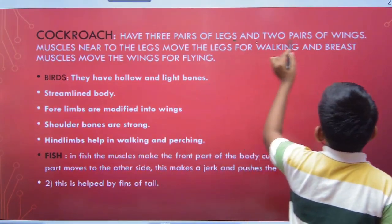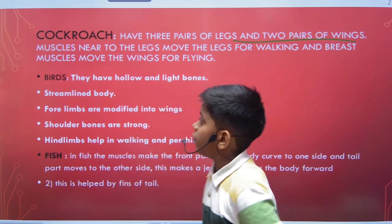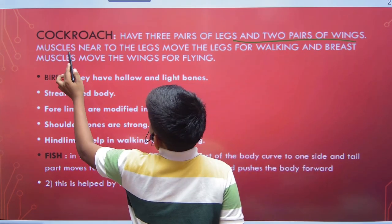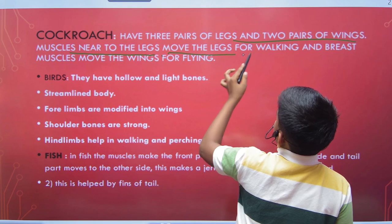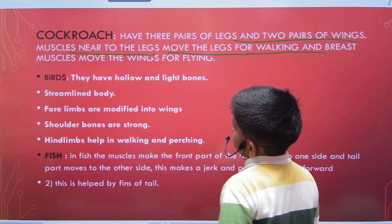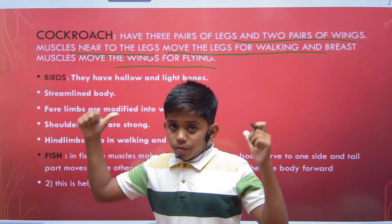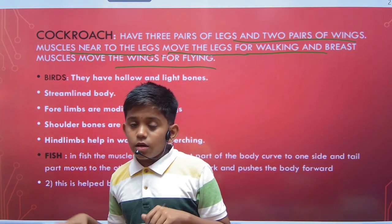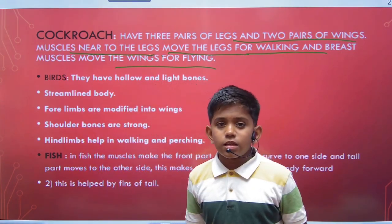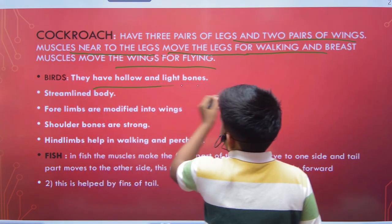The cockroach has three pairs of legs (six legs) and two pairs of wings (four wings). The muscles near the legs move the legs for walking, and the breast muscles move the wings for flying.